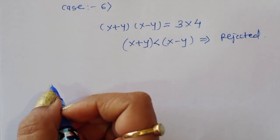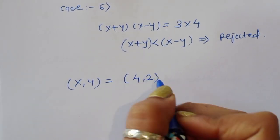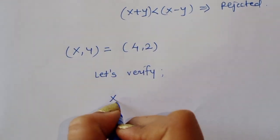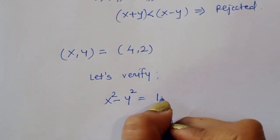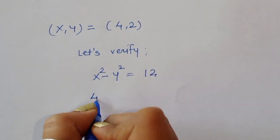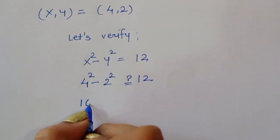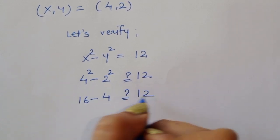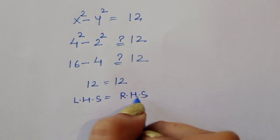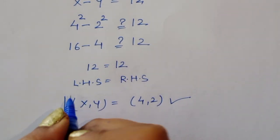We have only one solution: x = 4 and y = 2. Let's verify: x² - y² = 4² - 2² = 16 - 4 = 12. LHS equals RHS, so the solution x = 4, y = 2 is correct.